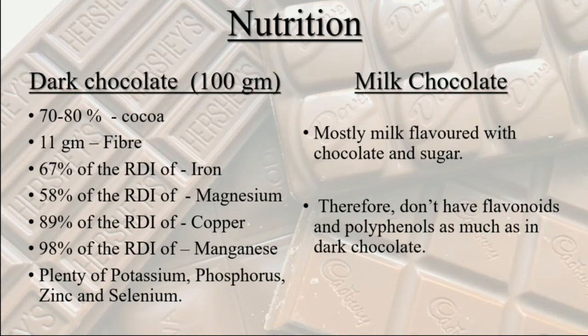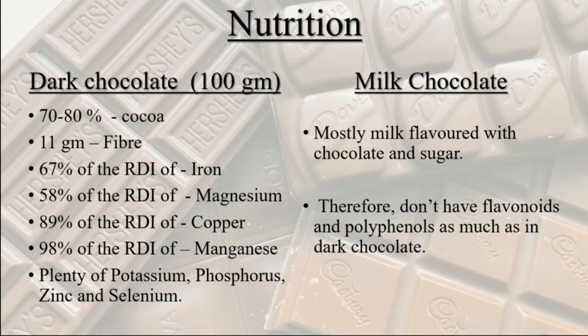In the nutrition part, dark chocolate scores higher than milk chocolate. Dark chocolate has 70 to 80 percent cocoa, which is very rich in polyphenols and flavanols with high antioxidant properties and numerous health benefits. Being plant-origin, cocoa also provides a good amount of fiber — roughly 11 grams per 100g of chocolate. It also has many micronutrients: 100g of dark chocolate fulfills 67% of the daily RDI for iron, 58% for magnesium, 89% for copper, and 98% for manganese. It also contains plenty of potassium, phosphorus, zinc, and selenium, making dark chocolate a rich source of micronutrients.